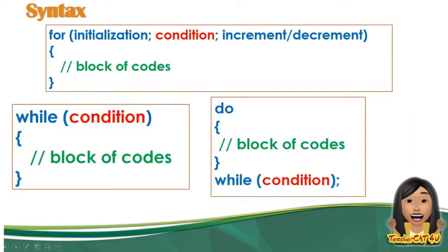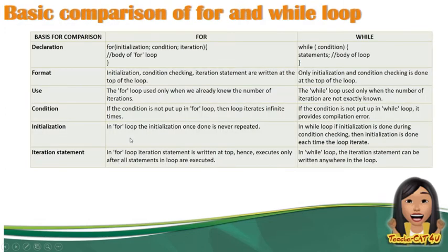Yung initialization, condition, increment — nasa taas silang lahat sa for loop. Samantalang kay while, nandito condition lang. Then the increment/decrement, nandito sila sa body. And the initialization, mostly nasa taas ng while. Another na pagkakaiba ng for at saka ng while is the use: ang for kasi, ginagamit siya only when we already knew yung number of iterations. Samantalang si while loop is used only when the number of iterations are not exactly known.